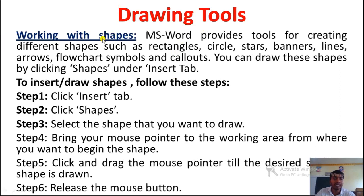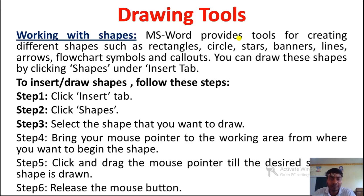Here we have a very important topic: shape options. What is the use of the shape option? MS Word provides tools for creating different shapes such as rectangles, circles, stars, banners, lines, arrows, flowchart symbols, and callouts. You can draw these shapes by clicking Shapes under the Insert tab. This shape option allows us to draw shapes like triangle, circle, star, line, arrow, etc. in our document, and this option is available in the Insert tab.